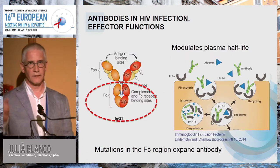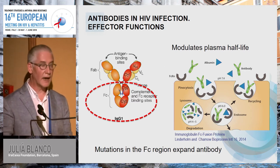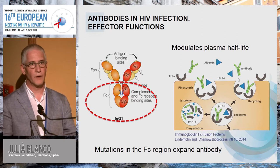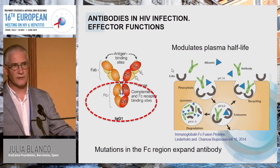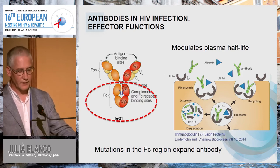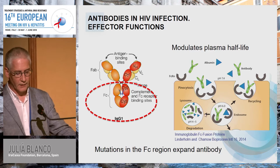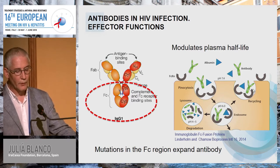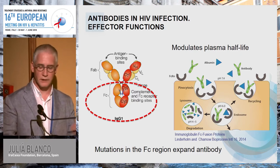Another function controlled by the FC moiety is the half-life of IgGs in plasma, which is relevant for designing long-acting antibodies. Half-life is controlled by endothelial cells expressing an FC receptor on their surface. This receptor endocytoses IgGs, which are then degraded by lysosomes. By modifying the affinity of antibodies for these receptors at acidic pH, we can keep the antibody bound to the receptor so the recycling endosome releases it back into circulation, avoiding degradation.